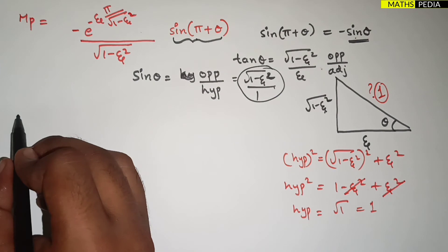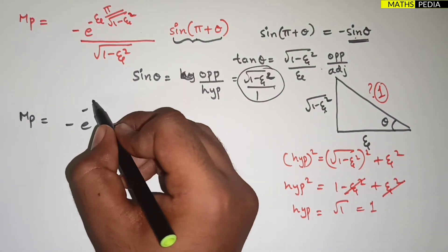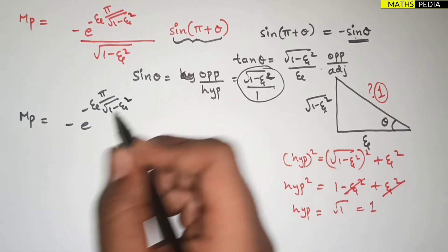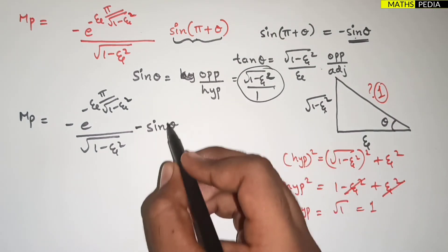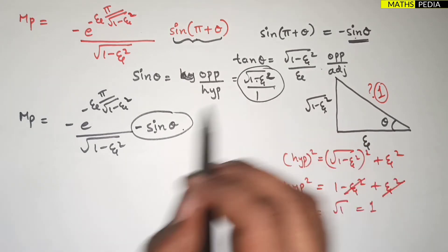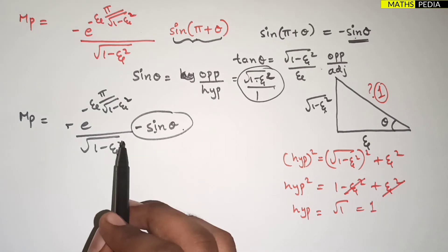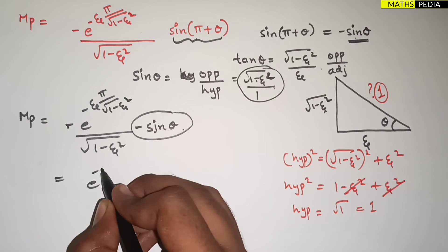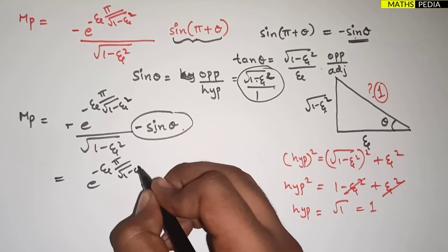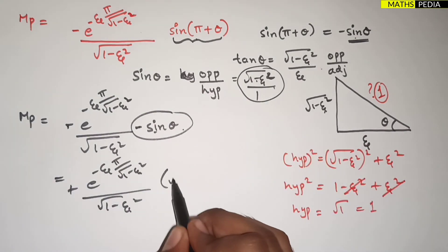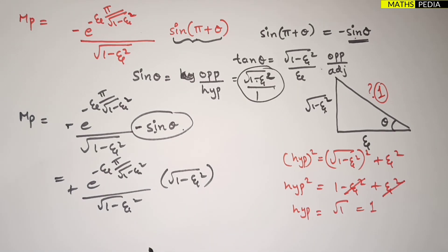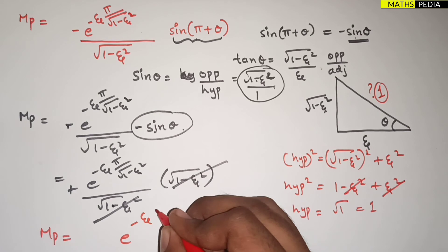Substituting back: sin(π+θ) = −sin θ = −√(1−ζ²). The expression becomes: −e^(−ζπ/√(1−ζ²)) / √(1−ζ²) · (−√(1−ζ²)). The two minus signs cancel to give a positive. The √(1−ζ²) in the numerator and denominator also cancel.